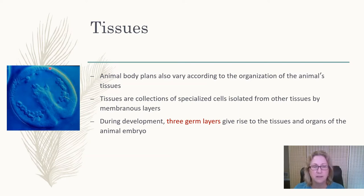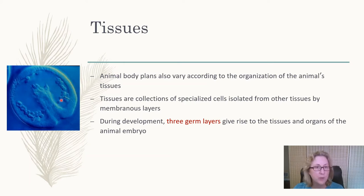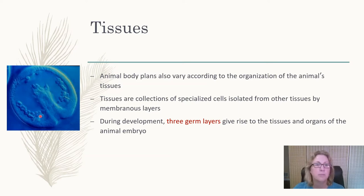We have the primitive gut starting to form — that is the endoderm — and then in between those two layers we have the mesoderm. The mesoderm forms the skeleton, the blood, and muscles.